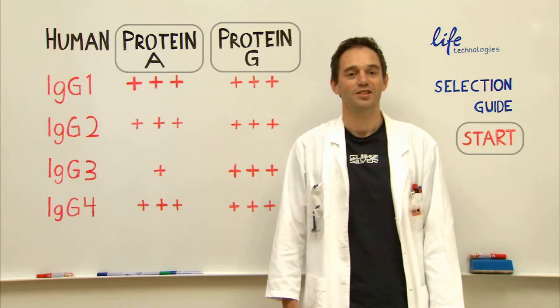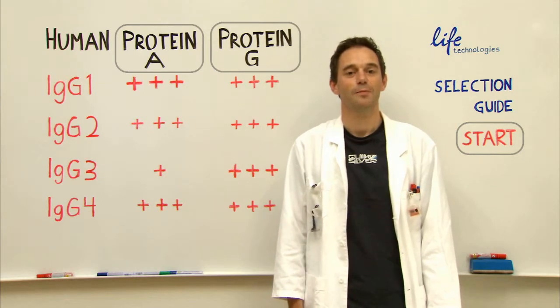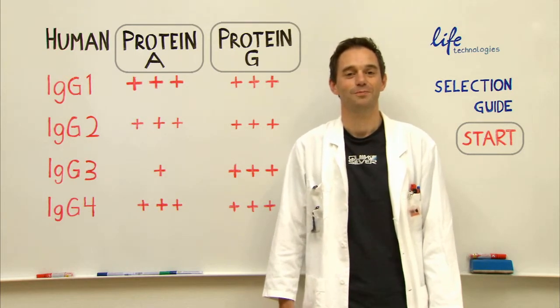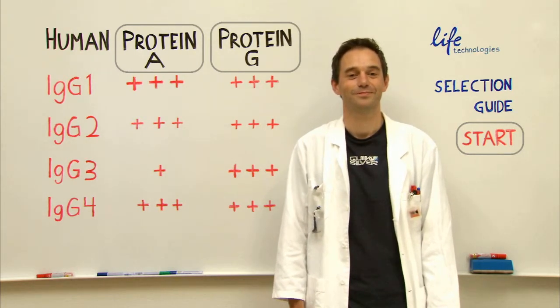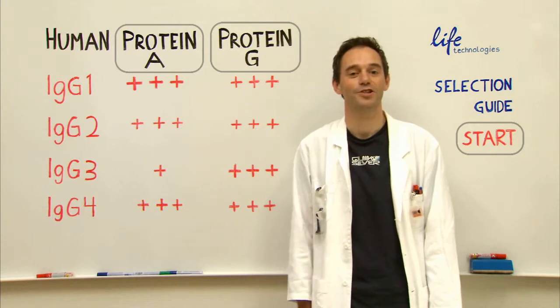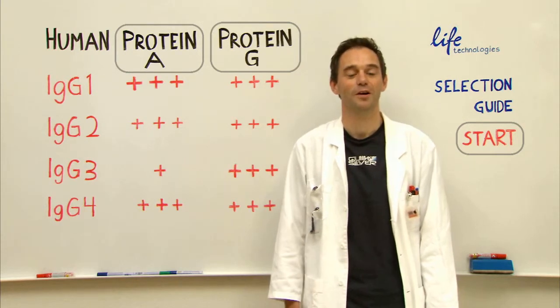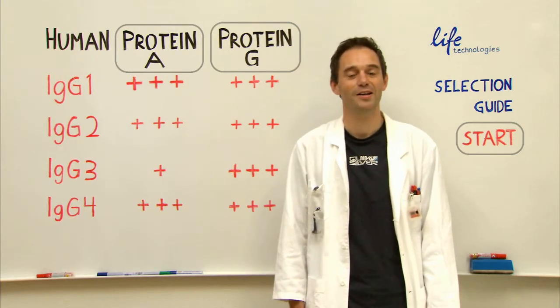So when affinity is the same, I recommend protein G. I recommend protein G for all subclasses listed here. Go ahead and make a selection.